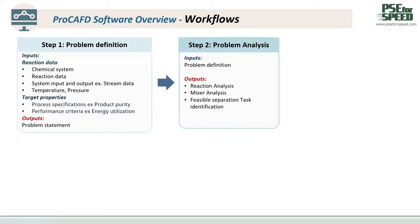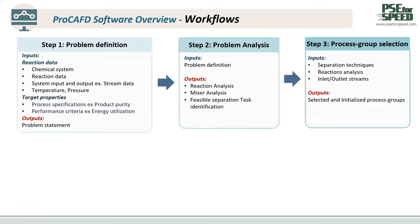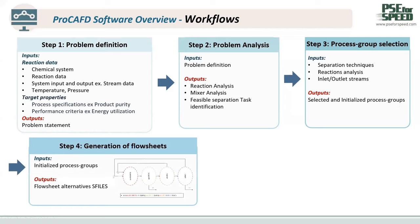For step two, the problem analysis, when the problem statement has been created, the program will generate the reaction analysis, mixture analysis, and feasible separation type identification. Then for step three, the program will take the information generated in step two and create the initialized process group. In step four, the program will use the information of the initialized process group and generate the alternative flow sheet, stored in the form of the S file.